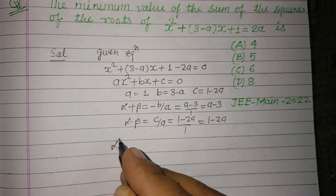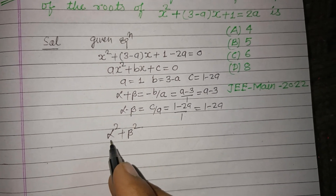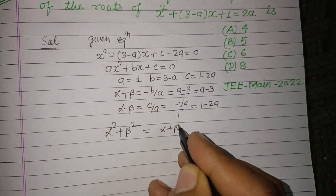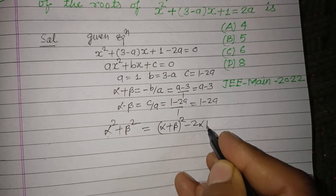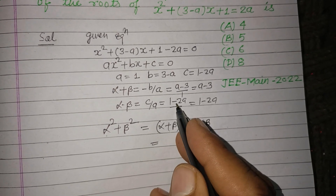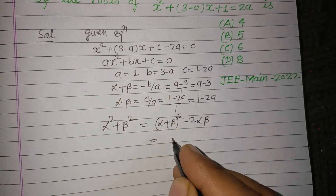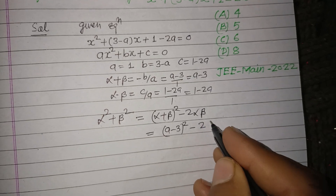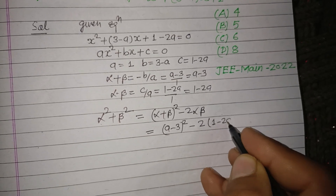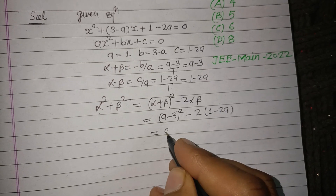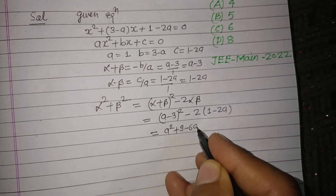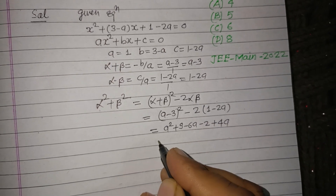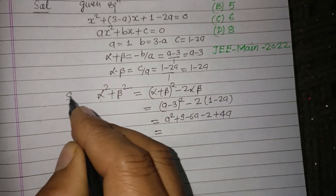The sum of the squares of the roots is α² + β², which equals (α + β)² - 2αβ. Substituting: (a - 3)² - 2(1 - 2a), which expands to a² + 9 - 6a - 2 + 4a.